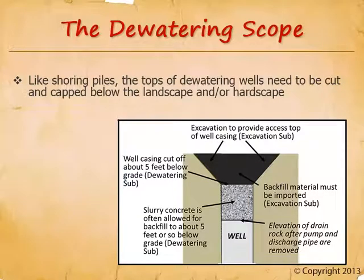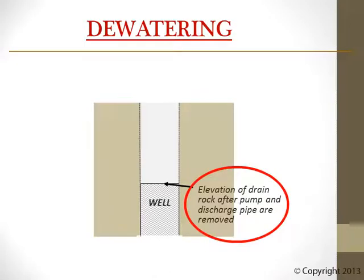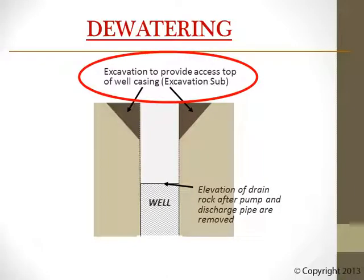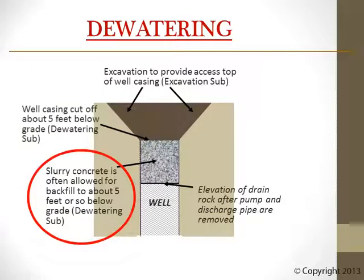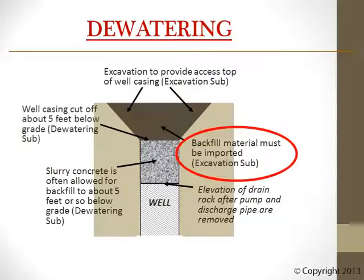Let's walk step by step through cutting, capping, and abandoning the dewatering wells. The dewatering subcontractor will remove their pump and discharge pipe, which causes the drain rock to settle down lower in the casing. Salvaging of materials may be the only piece of this operation included in sub-bids without specific direction. The excavation subcontractor should dig down to provide safe access to the point of cut on the casing. The dewatering subcontractor will cut off the well casing typically about 5 feet below grade, and they also need to be responsible for off-hauling the debris. Backfilling from the top of drain rock to the top of casing will be completed by the dewatering subcontractor — usually done with slurry concrete, but sometimes pea gravel or other self-compacting material. Finally, importing the soil, backfilling, and compacting is typically done by the excavation subcontractor.